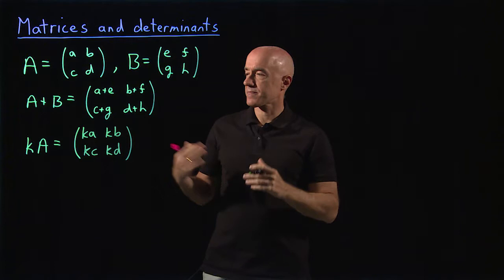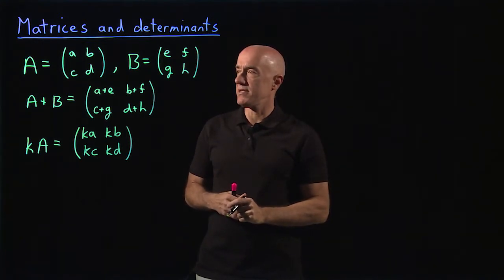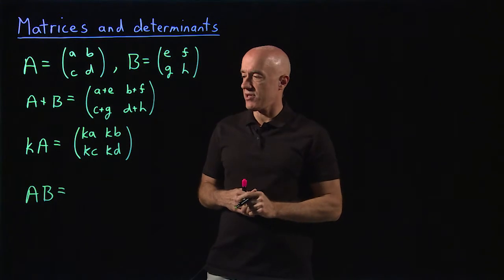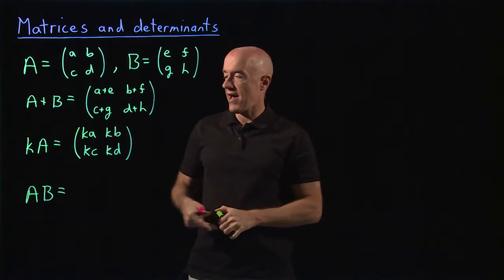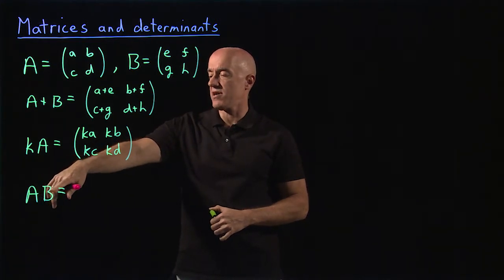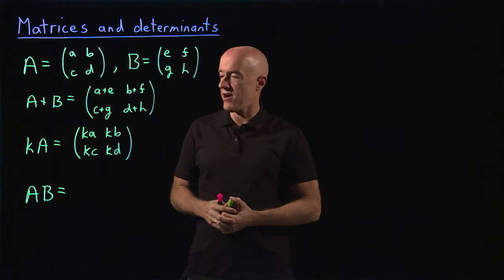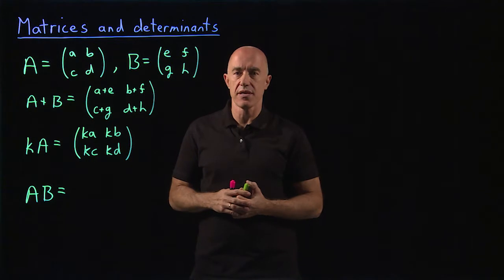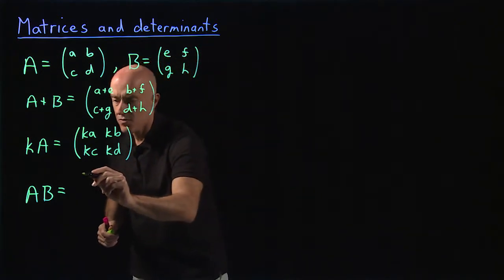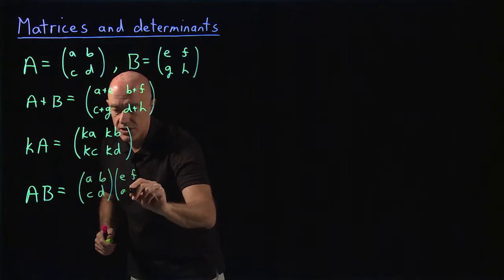The last algebra we need to know is multiplication of matrices. You can multiply matrices A times B, but you cannot multiply all matrices — their dimensions have to match. You have to have the number of columns of A equal to the number of rows of B. In the differential equations course we'll only be talking about two by two matrices, so you can always multiply two by two matrices. We can write that out as A, B, C, D times E, F, G, H.